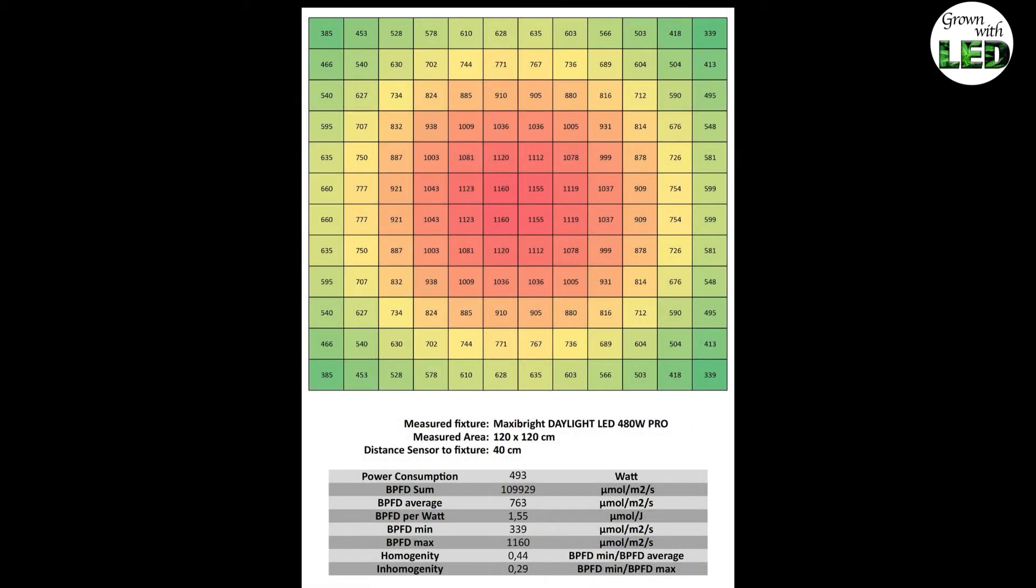This is the light plot of the MaxiBright Daylight LED 480 Watt Pro, measured at a distance from the sensor to the fixture of 40 centimeters inside a 120 centimeter tent. The measured power consumption was 493 watts. The PPFD sum is 109929. The PPFD average is 763. The PPFD per Watt is 1.55 micromole per Joule.